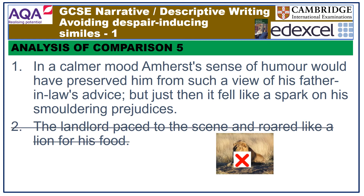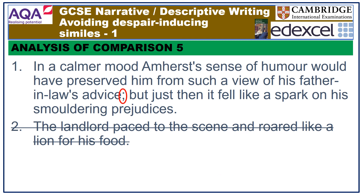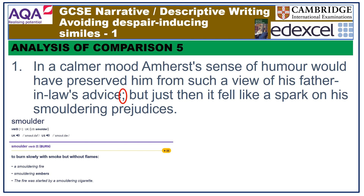So let's explore the first example in a bit of detail. Essentially, it talks about how Amherst would normally not react to his father-in-law, but at this particular moment, and with him in a particular mood, he can't help but erupt. Note the accurate use of the semicolon, where before and after have the requisite main clause. And the simile itself? Well, this indicates how beneath his general demeanour there lies some repressed, angry feelings. Deep inside, he already has slow-burning prejudices, meaning that it doesn't take a great deal for him to erupt. The spark of his father-in-law's irritating, smug advice is sufficient to flame his resentment and cause it to come to the surface.